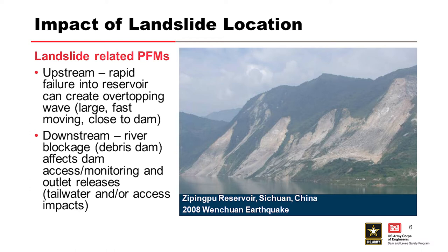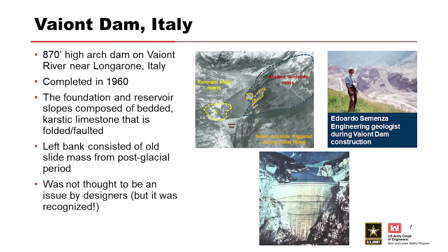In Alaska, on one of our projects — Lowell Creek Dam and Tunnel — they had a landslide issue triggered by earthquakes, which would create a reservoir upstream and impact both structures if that land mass failed rapidly. That was one of the failure mode considerations of that project.